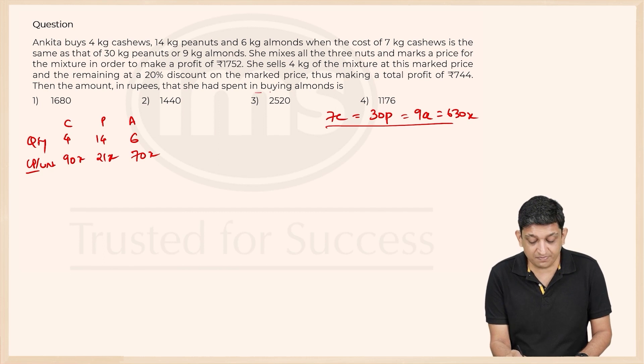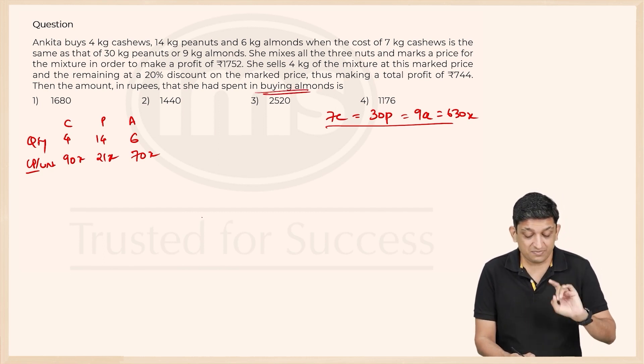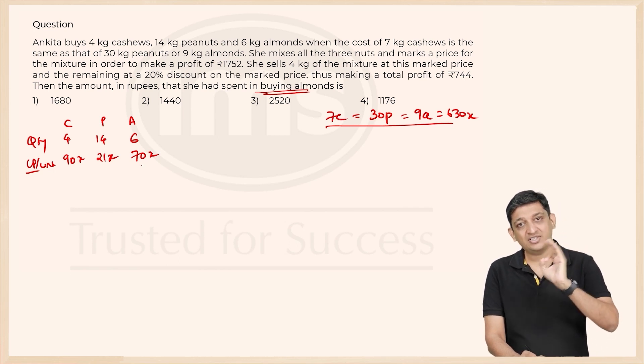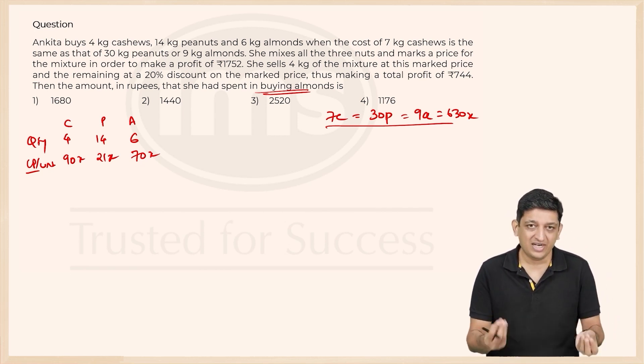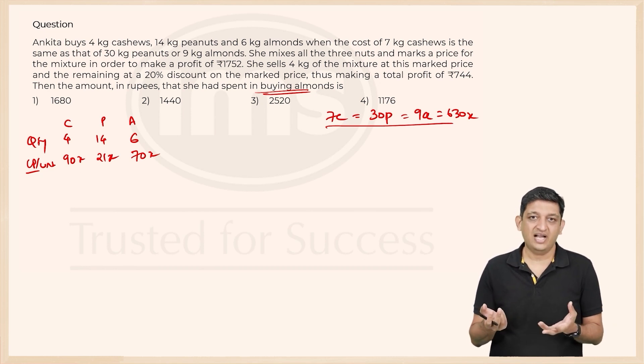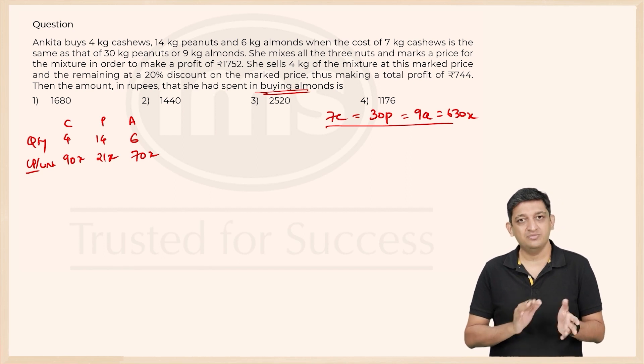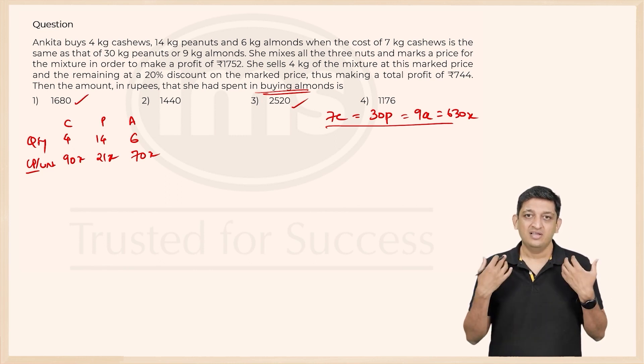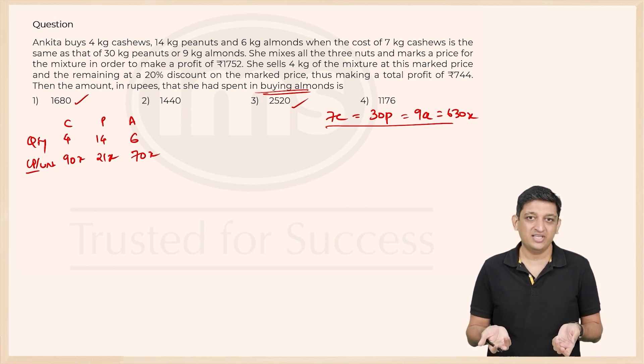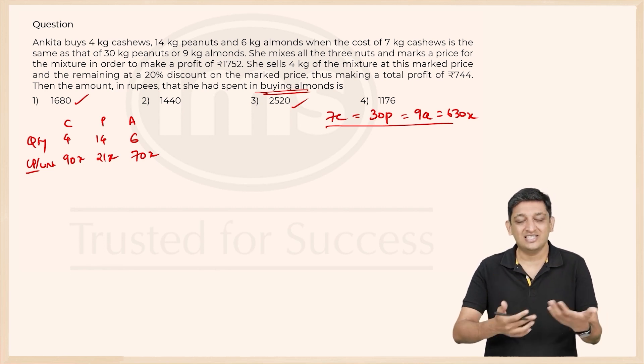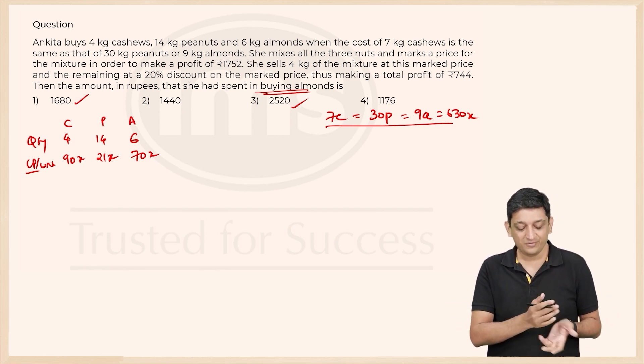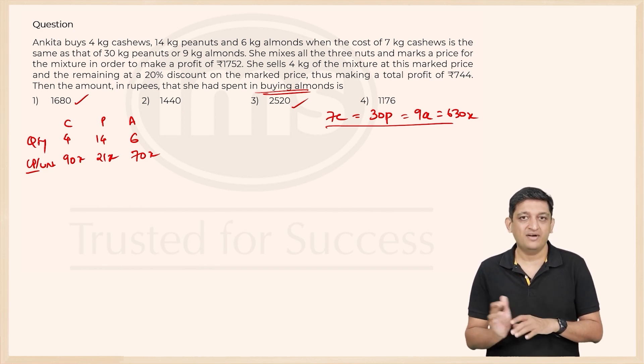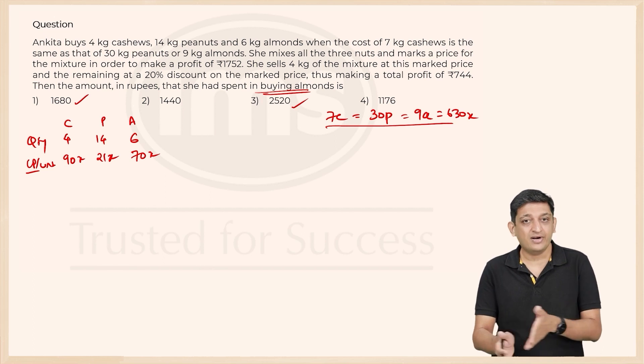Now the question asks you the amount in rupees that she had spent in buying almonds. The amount that she had spent in buying almonds is 70X into 6, so 420X has to be our answer. Now again, a leap of faith that you can take in this particular context. If you look at the options, you have 1680 and 2520 as the only viable options. So at this point in time, you have reduced the chances or increased the chances of getting it right to 50-50. This is basically what we can go for. But again, you will have a lot of time to solve these questions if you would have done the other questions efficiently.